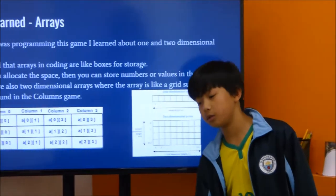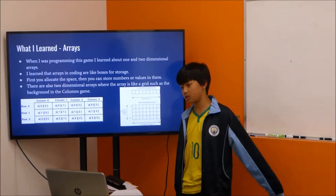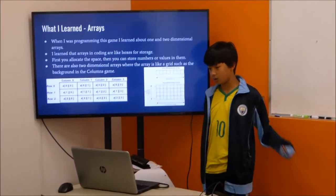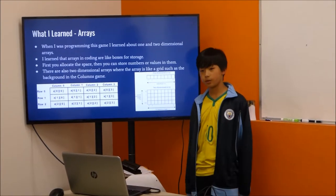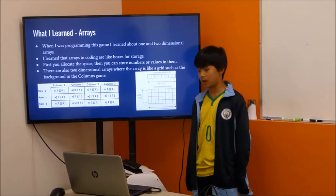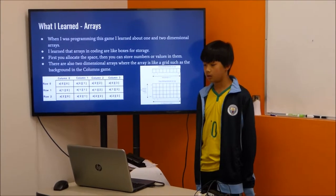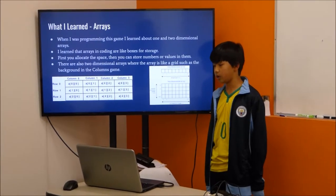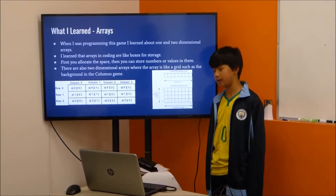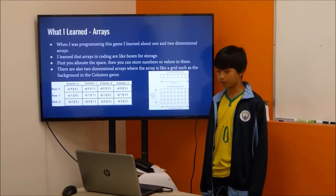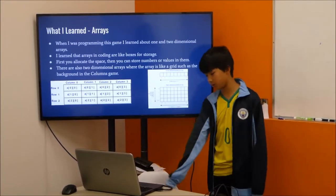I learned how to use three things: arrays, for loops, and while loops. Arrays are like boxes for storage in coding. First you allocate the space, then you can store numbers or values in them. There are also two-dimensional arrays where the array is like a grid, such as the background in the Columns game. This is one-dimensional array, these are both two-dimensional arrays.